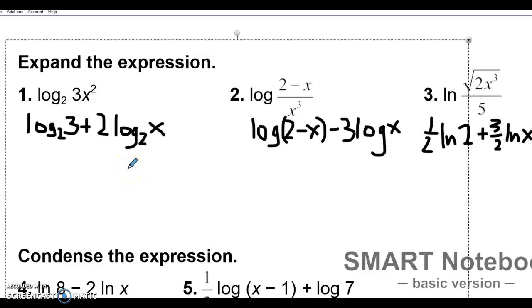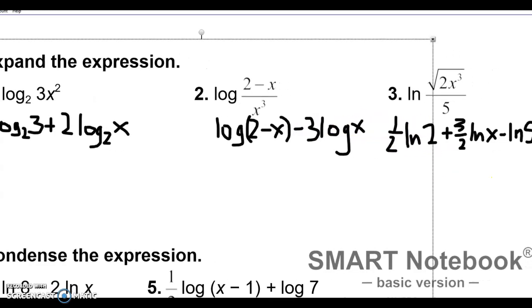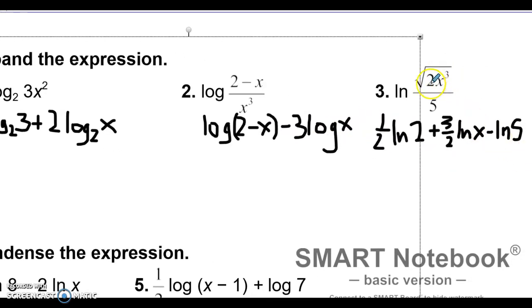So the first one, expanded out, it would be log base 2 of 3, plus the power and the 2, or the x squared comes out in front, so 2 log base 2 of x. This one, we have this value right here that's being divided, so it separates out here. Then we have the square root of 2x cubed would be 1 half, break out the 2, 3 halves log x 4 minus 2.